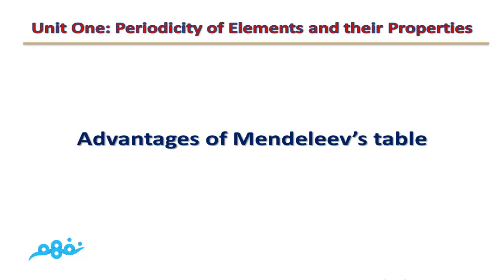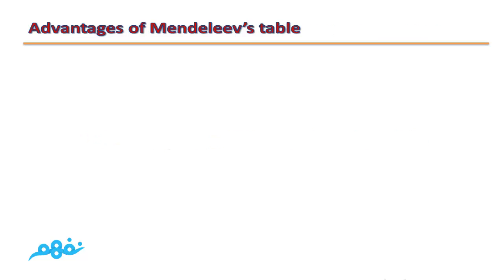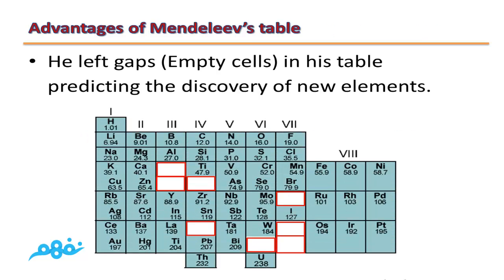We will study the advantages of Mendeleev's Periodic Table. The first advantage is that Mendeleev left gaps or empty cells in his table - this is an important question. He did this because he predicted the discovery of new elements, saying that these spaces will be filled in the future with new undiscovered elements.